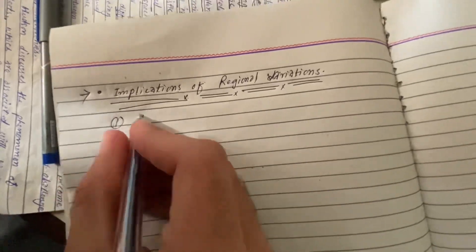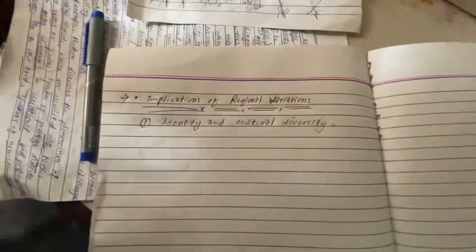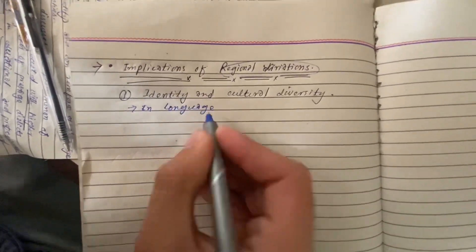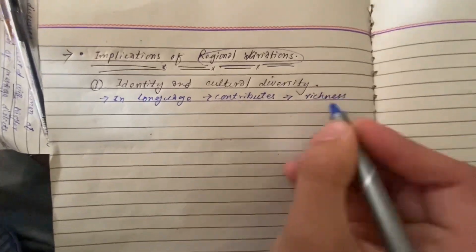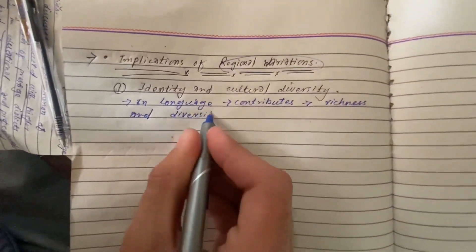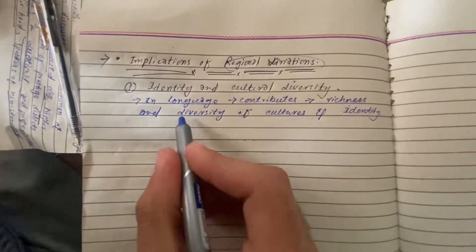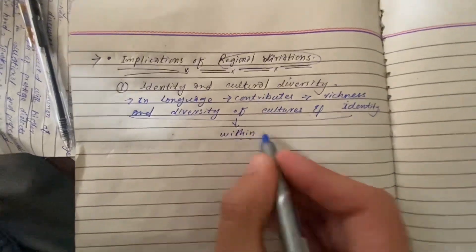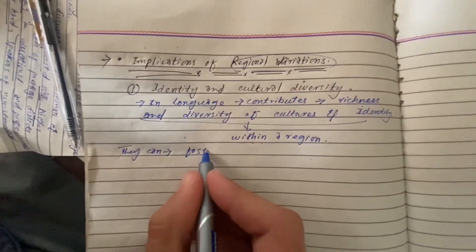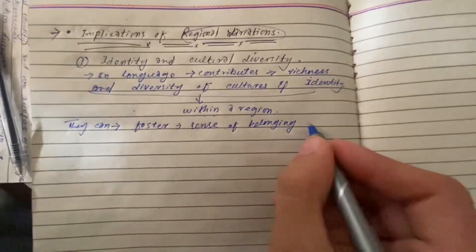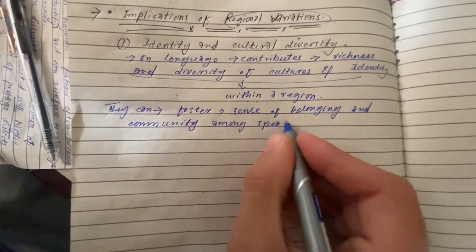Here are some of the implications of regional variations. Number one is identity and cultural diversity. Regional variation in language contributes to the richness and diversity of cultures and identities within a region, and can foster a sense of belonging and community among speakers of a particular regional variety.